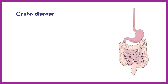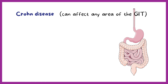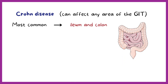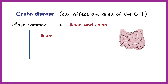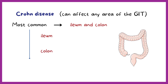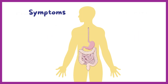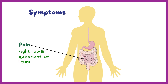A final difference is that Crohn's disease can affect any area of the GI tract. Most commonly it affects both the ileum and colon, second most commonly just the ileum, and third most commonly just the colon. As more gastrointestinal tissue is damaged, patients might experience pain in the affected areas, commonly in the right lower quadrant, which is associated with the ileum.